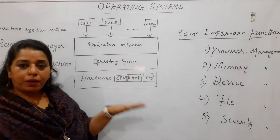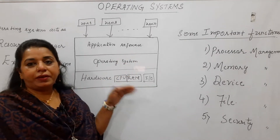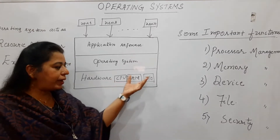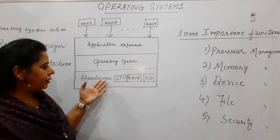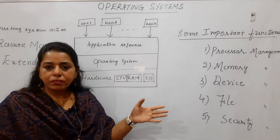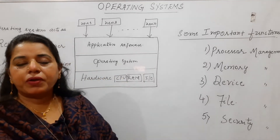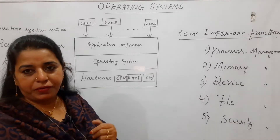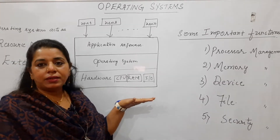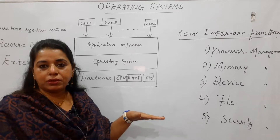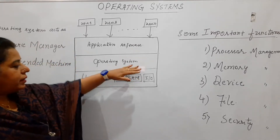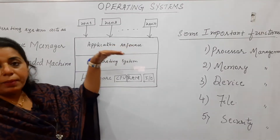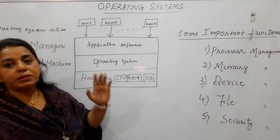Normally, in a machine, at the bottom-most level we have the hardware — hardware devices such as the CPU, RAM, and input-output devices. Those are the main parts of a computer system. That is the bottom-most layer. Then comes the next layer, which is the operating system. Upon that is the application software, and then comes the user.